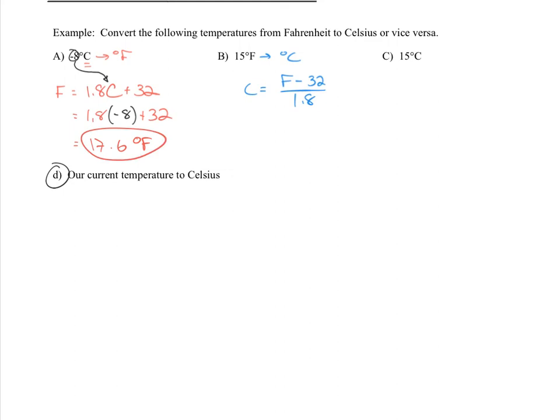So then you can do something very similar over here. If you grab this 15 degrees Fahrenheit and push it in here for F, you'll get an equation that looks like this. C equals 15 minus 32 over 1.8. And that will give you negative 9.4 degrees Celsius.